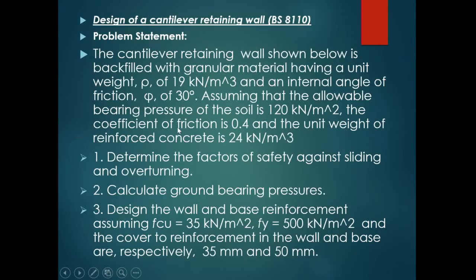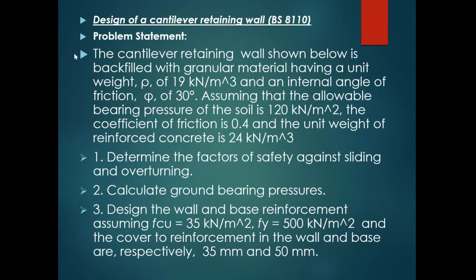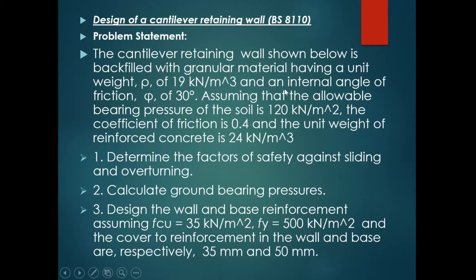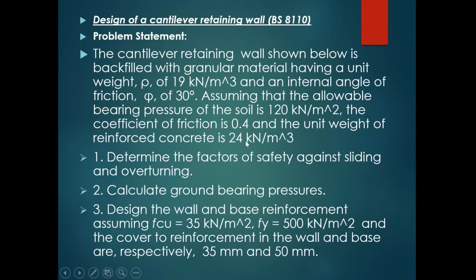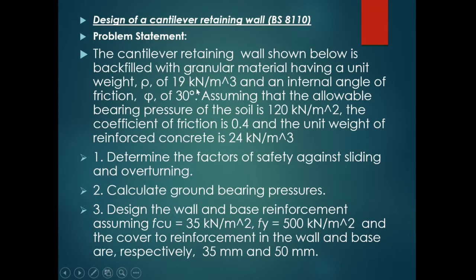Now let's get to the problem statement. We have to design a cantilever retaining wall backfilled with granular material having a unit weight of soil of 19 kN/m³ and an internal angle of friction φ of 30 degrees, assuming an allowable bearing pressure of 120 kN/m². The coefficient of friction is 0.4 and the unit weight of reinforced concrete is 24 kN/m³. These soil parameters will be given by your geotechnical investigation report and are very important parameters which define the design of your cantilever retaining wall.